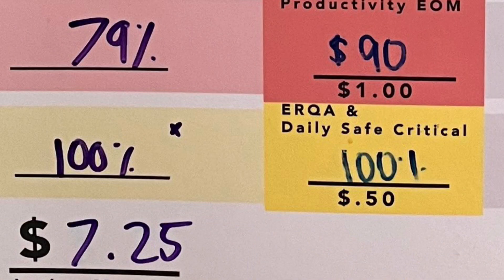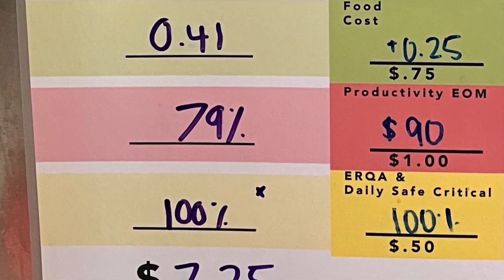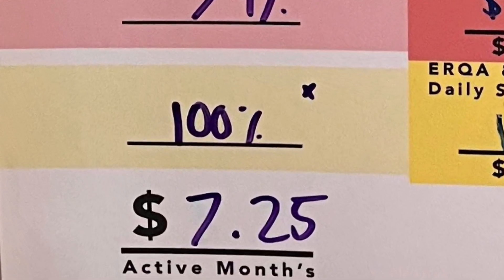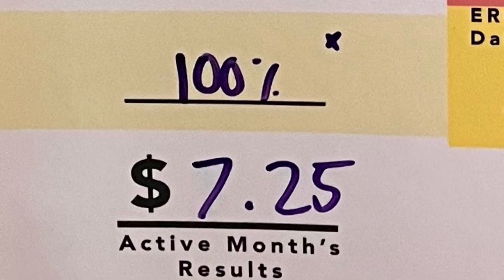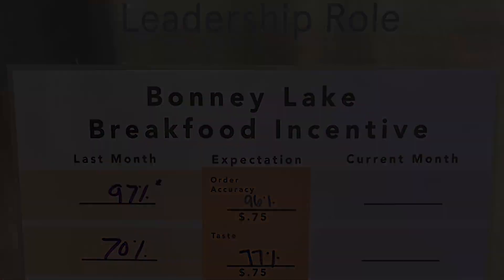ERQA and daily safe critical. ERQAs are front of house's way of checking the quality of our food, and daily safe are ways that back of house ensure that our kitchen is safe. This percentage is how often those checks are done each day — it's normally 100% of the time. Sum all of those things up and you can see how our store is not only performing, but how much break food is going to be for that time period. Let any director know if you have any questions. Thanks.